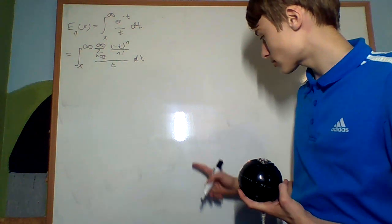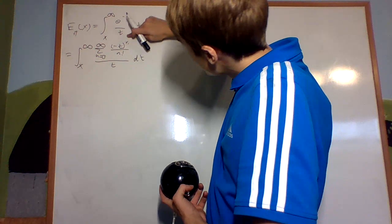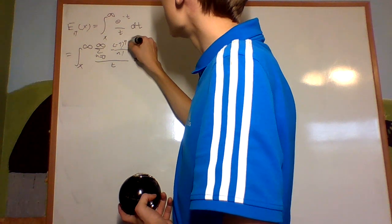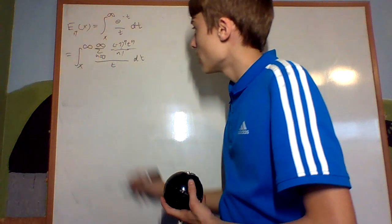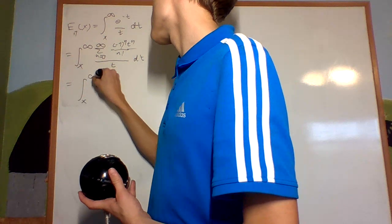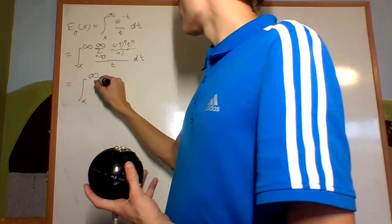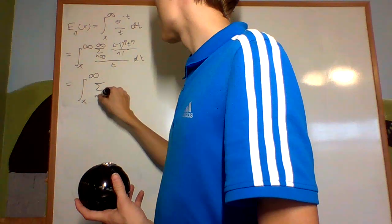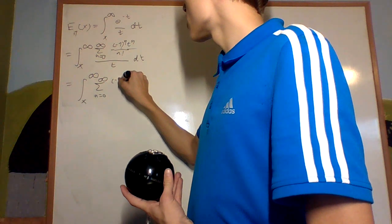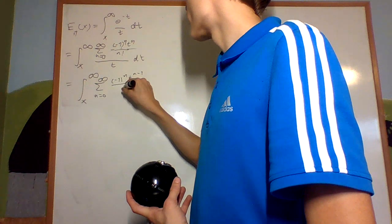Now I'm going to make negative t to the n into negative 1 to the n times t to the n. So then I can actually work with this. This is going to be the integral from x until infinity of the sum from n equals 0 until infinity of negative 1 to the n times t to the n minus 1 over n factorial dt.